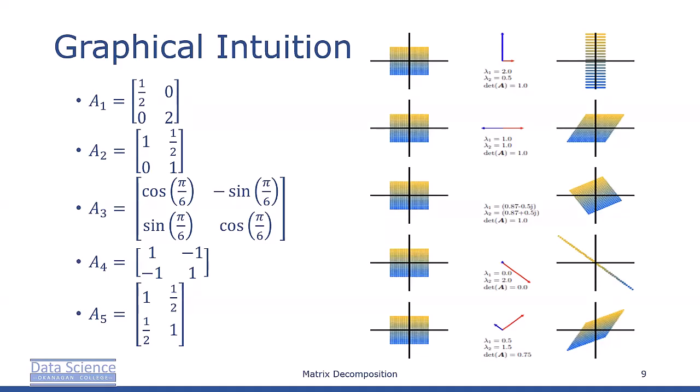In picture 4, we have the matrix A = [[1, -1], [-1, 1]], which represents a mapping in the standard basis that collapses a two-dimensional domain into a one-dimensional domain. Since one eigenvalue is zero, the space in the direction of the blue eigenvector corresponds to lambda 1 equals zero, and when that collapses, the orthogonal red vector stretches the space by a factor of lambda 2 equals 2. This leaves the image with area zero, which is why the determinant of A equals zero.